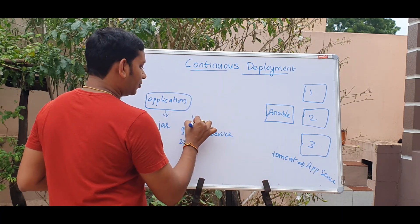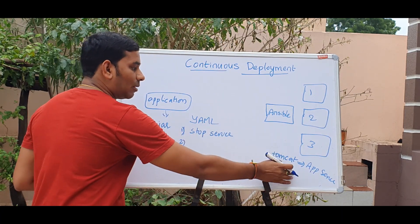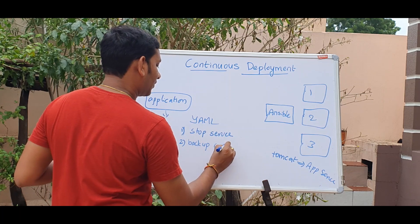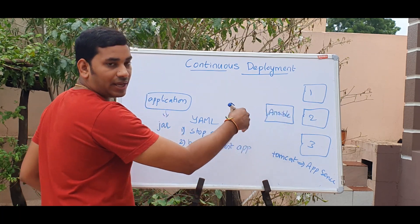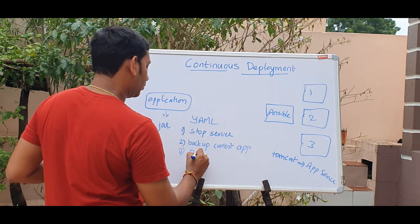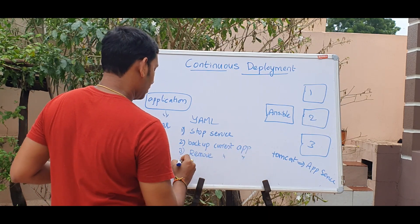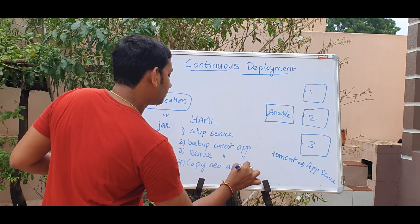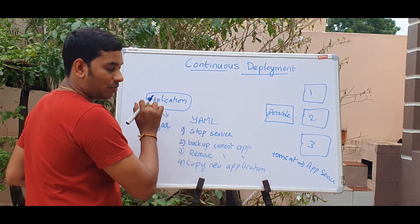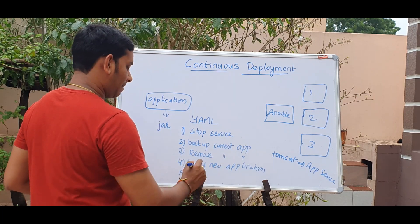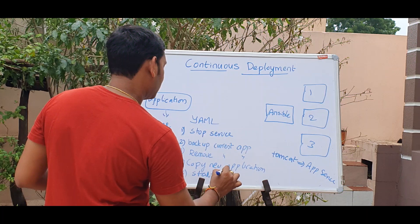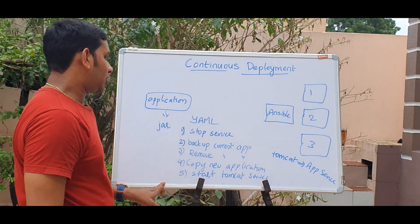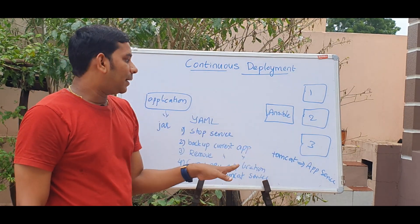My shell script will launch as follows: first, stop the Tomcat server; then backup the current application; remove the current running application; copy the new application; then start the Tomcat server. This is the whole deployment procedure when the server is already running.